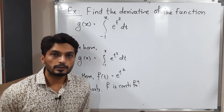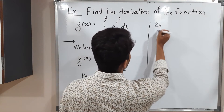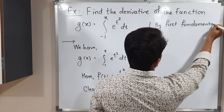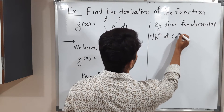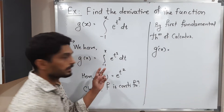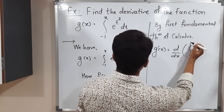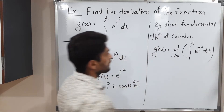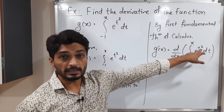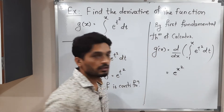Clearly f is a continuous function, so the first fundamental theorem of calculus is applicable here. By the first fundamental theorem of calculus, g dash of x equals the derivative of integration from minus 1 to x of e raised to t square dt. The integration and derivative cancel each other, and we replace t by x. So the answer is e raised to x square.